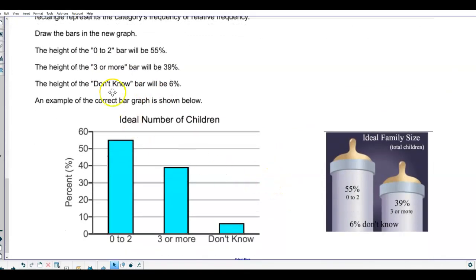So, we draw bars in the new graph, comparing it to this graph. The height of the 0 to 2 bar will be 55%, the height of the 3 or more is 39%, and the height of the don't know bar will be 6%.